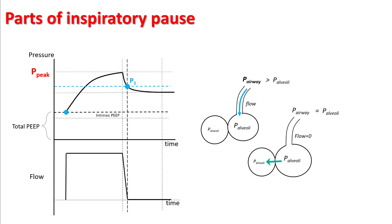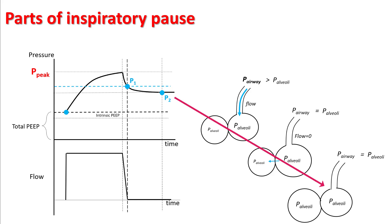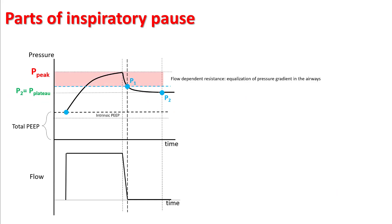However, because of different time constants of the alveoli and stress relaxation, the air will continue to move amongst the alveoli and finally the pressure will stop at P2, where the pressure in all the lungs and the trachea are similar. That point is P2, which is also called plateau pressure. The area shown in red shows the flow-dependent resistance part of the circuit. The purple area shows the stress relaxation and pendelluft phenomenon, and the green part shows the elastance of lungs and chest wall.